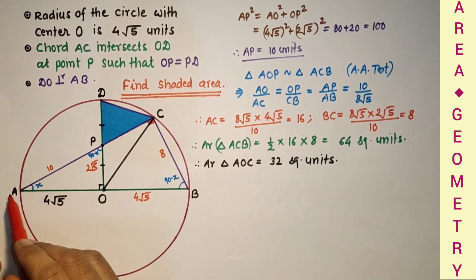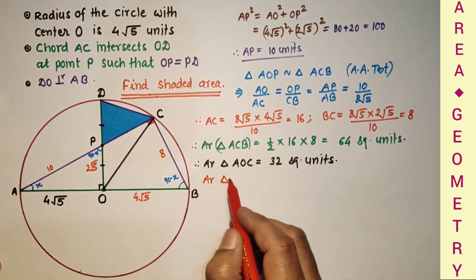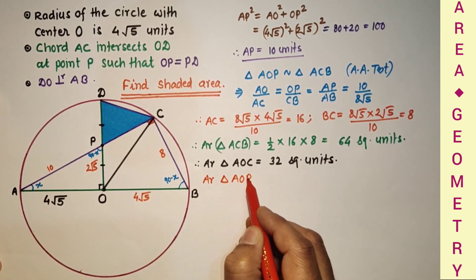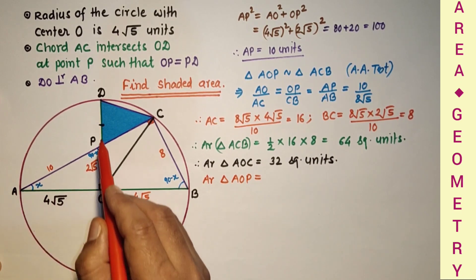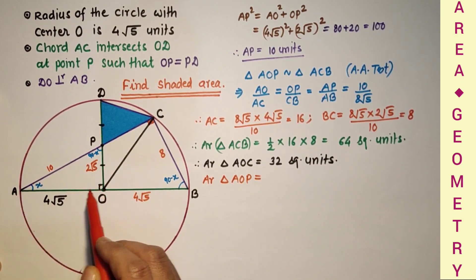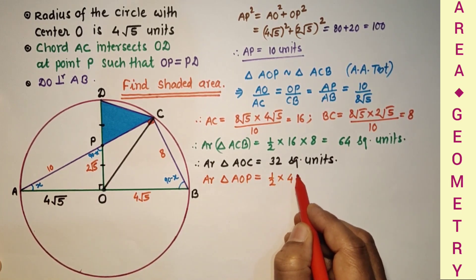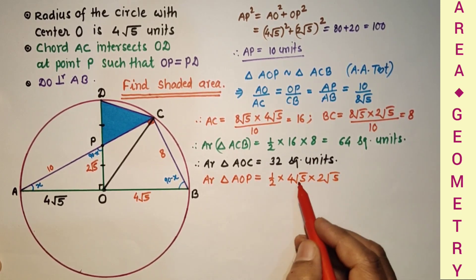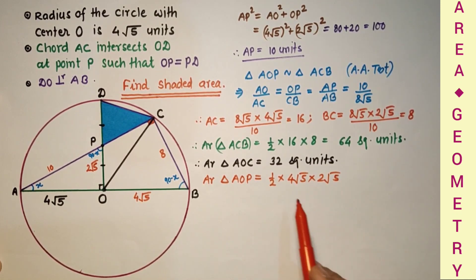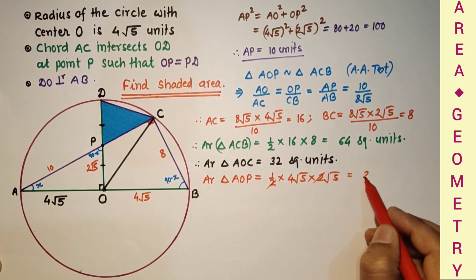Now area of triangle AOP. Area of triangle AOP, that is equal to half into base into height. This is 90, so half into product of legs, which is half into 4 root 5 into 2 root 5. Root 5 into root 5 is 5, into 4 into 2. This 2 and 2 will get cut. 4 into 5, which is 20 square units.